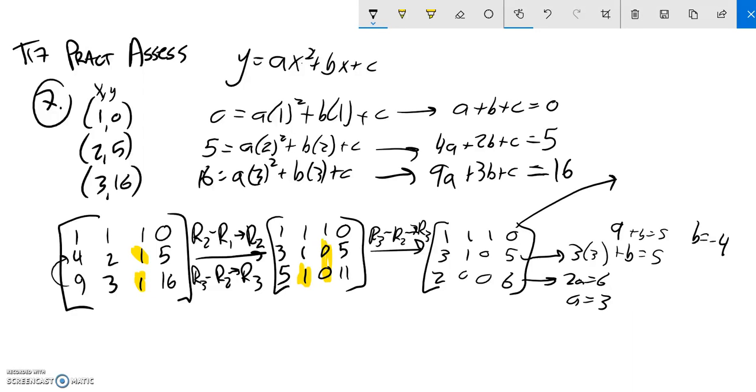Plug those both into this equation to get my c value. a is 3 plus b is negative 4 plus c is 0. So negative 1 plus c is 0. So c must be 1.